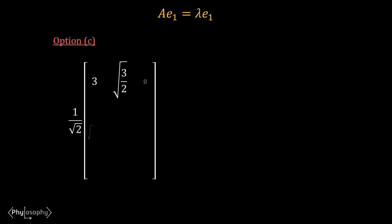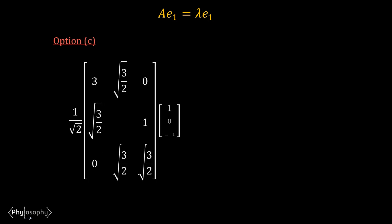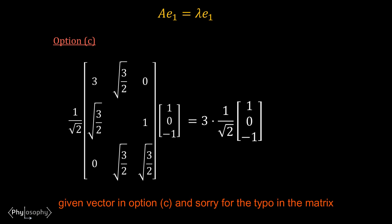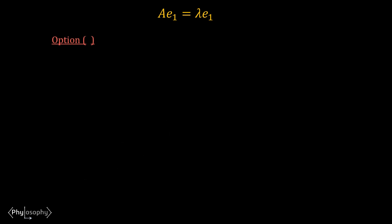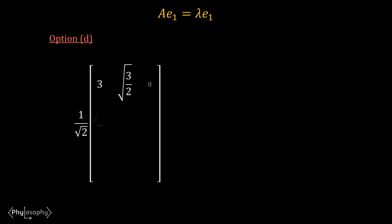For option C, if you multiply the vector with the matrix, you will get 3 times the given vector in option C. Therefore, the vector given in option C is the eigenvector of matrix A corresponding to eigenvalue λ = 3.